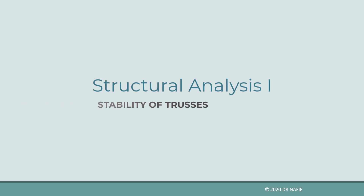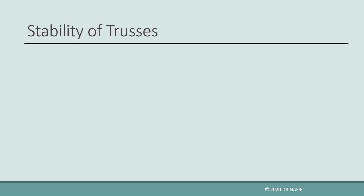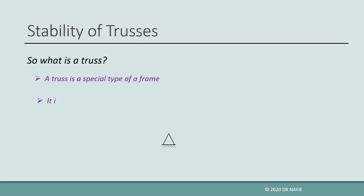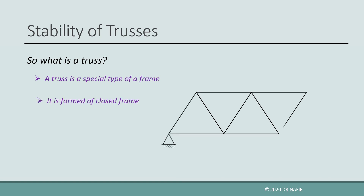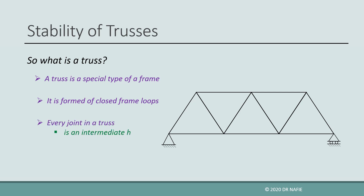Today we will talk about stability of trusses. Let's first define what is a truss. A truss is a special type of a frame. It is formed of triangular closed frame loops. The main difference between a truss and a frame is that every joint in the truss is an intermediate hinge.